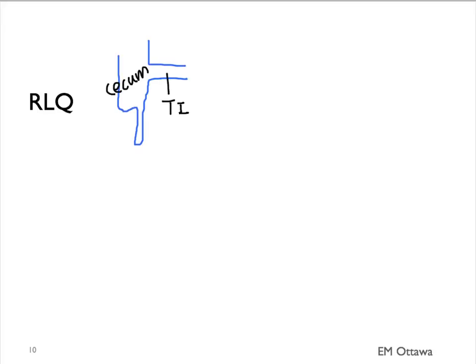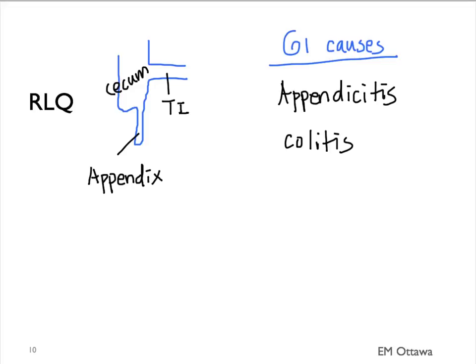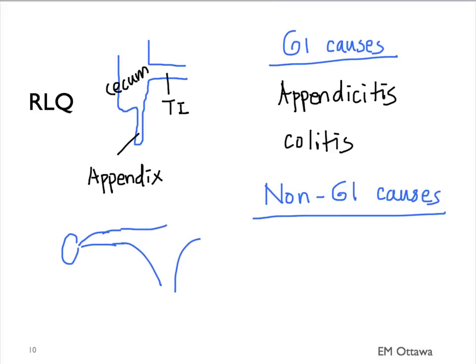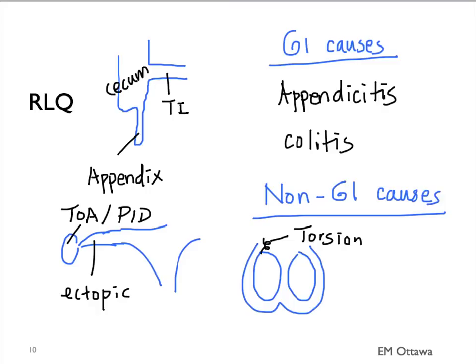What about the right lower quadrant? What lives there? The terminal ileum, cecum, and the appendix. The main GI cause is appendicitis, and it can also include colitis. For non-GI causes, the gynecological tract can refer pain to the right lower quadrant. Therefore, ectopic pregnancy, pelvic inflammatory disease, and tubo-ovarian abscess can refer pain there. In males, testicular disorders — including torsion, epididymitis, and orchitis — can also refer pain to the right lower quadrant.